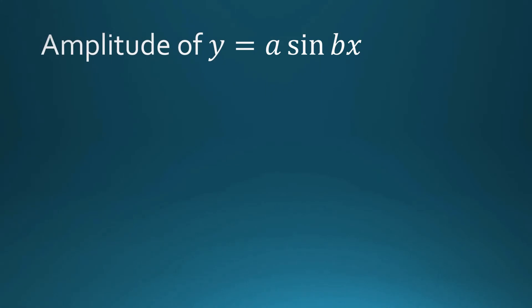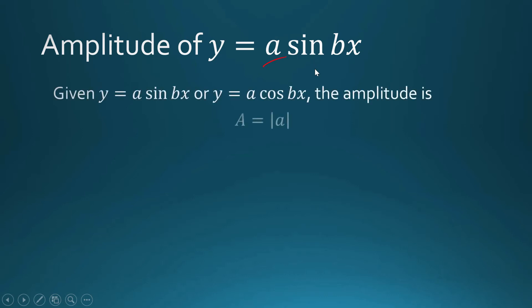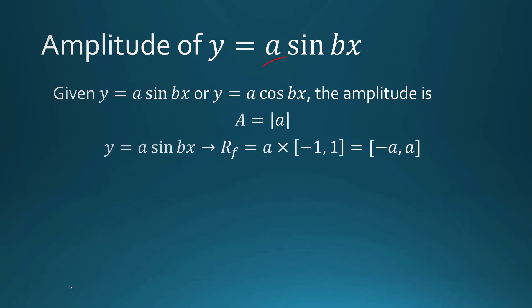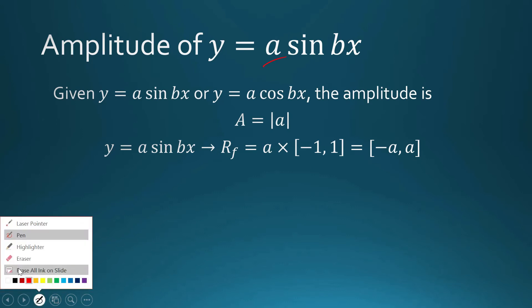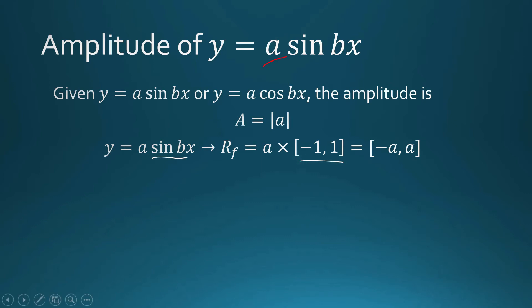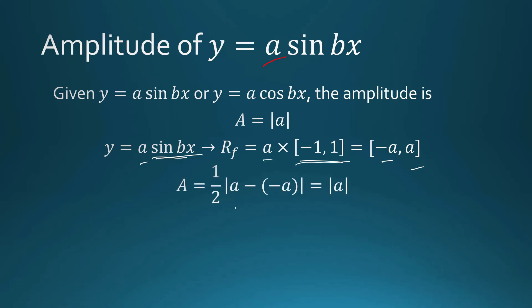In general, if we are given a function defined by y equals a times sine of bx, the amplitude has to do with a — in particular, it is equal to the absolute value of a. We know that the range of the simple sine function is the interval from negative 1 to 1. When you multiply a to that, the new range becomes a times that interval. So computing the amplitude gives us one-half times the absolute value of the maximum minus the minimum, which equals the absolute value of a.